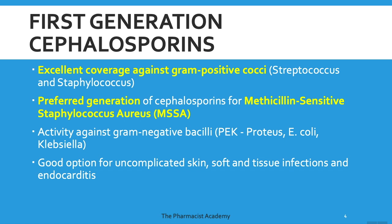The first-generation cephalosporins have excellent coverage against gram-positive cocci, and they are the preferred generation for methicillin-sensitive Staphylococcus aureus, which I'll discuss more towards the end. They also have gram-negative coverage, covering organisms such as Proteus, E. coli, and Klebsiella — though these agents are not really your go-to for gram-negative coverage. As we go through the generations, the gram-negative coverage improves. These agents are good options for uncomplicated skin, soft tissue infections, and endocarditis.